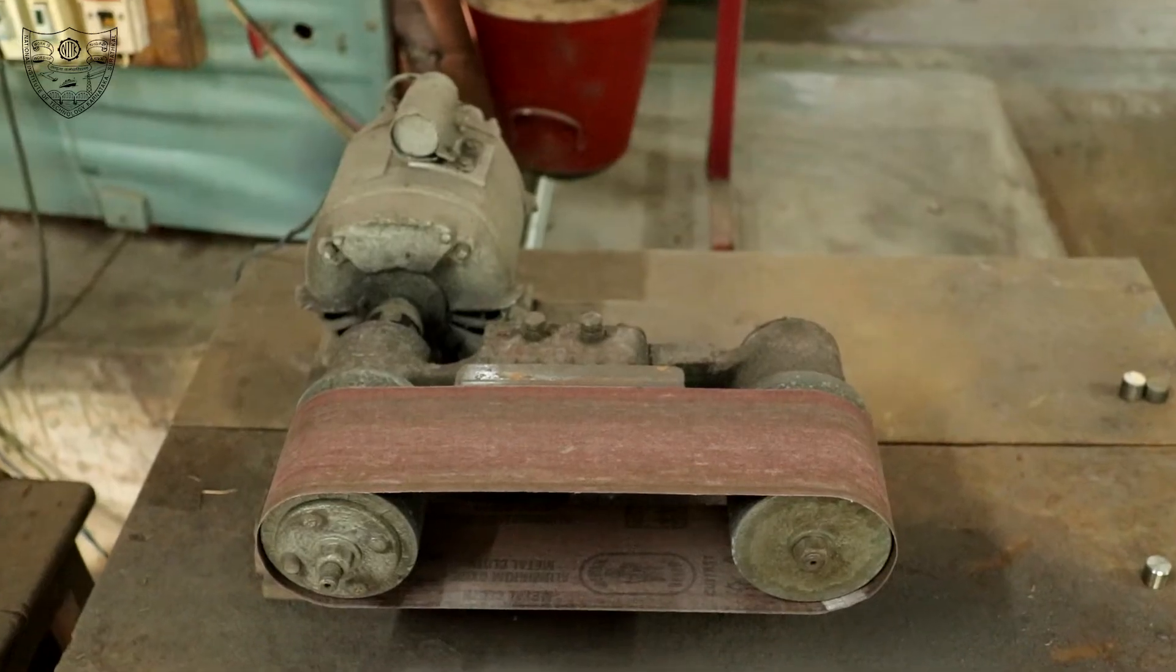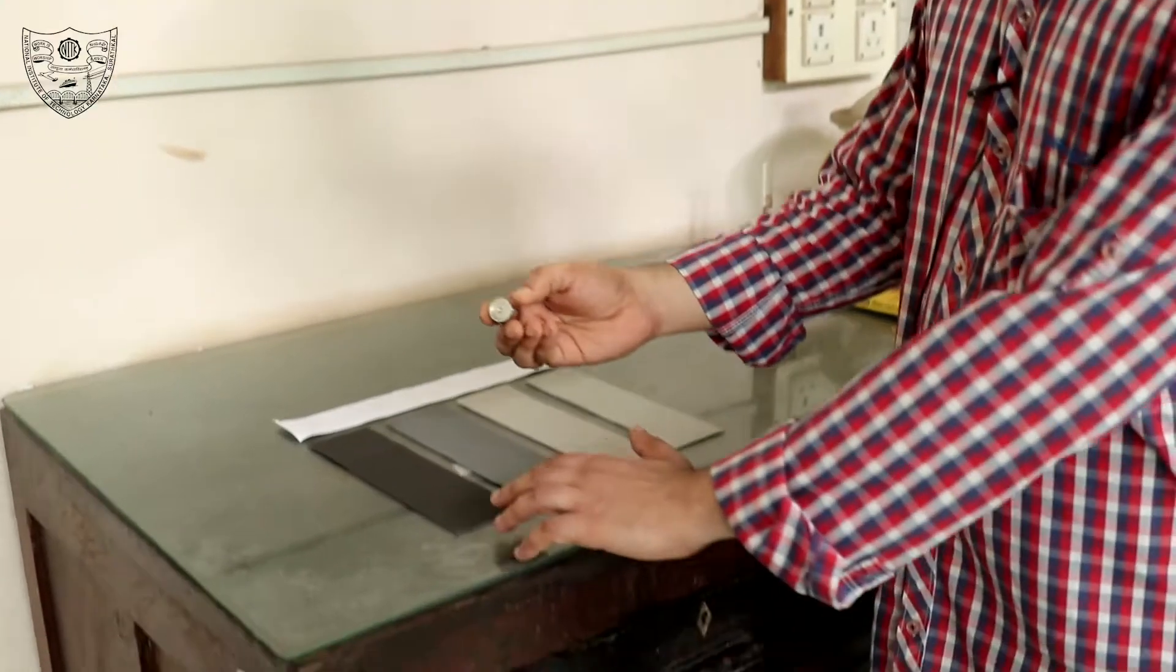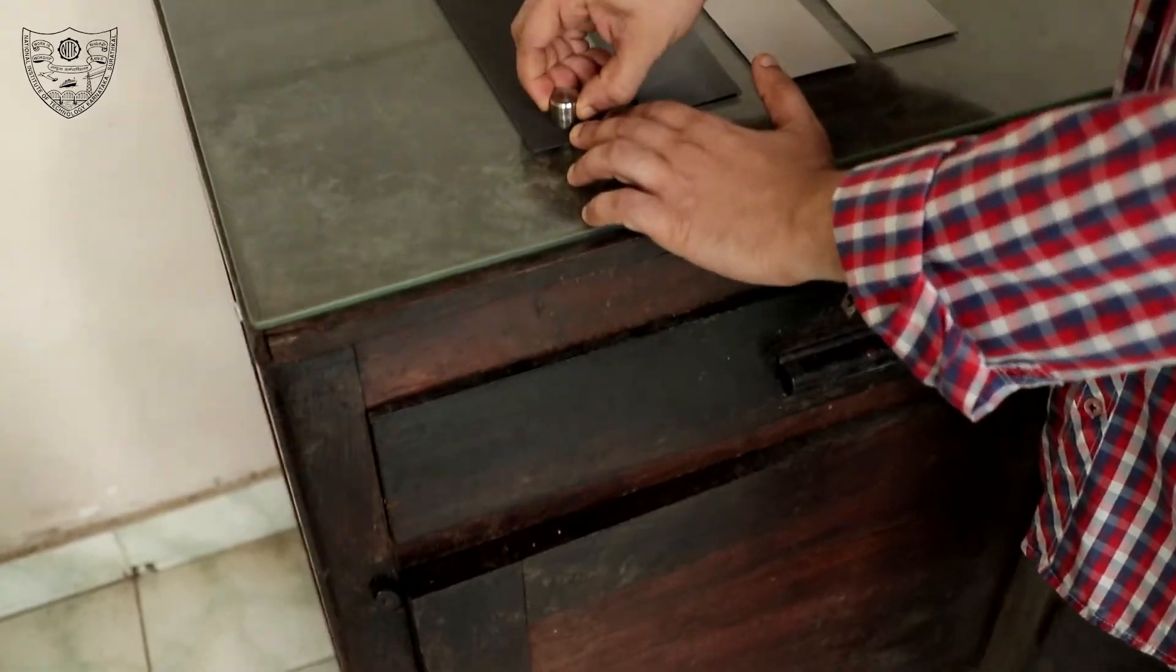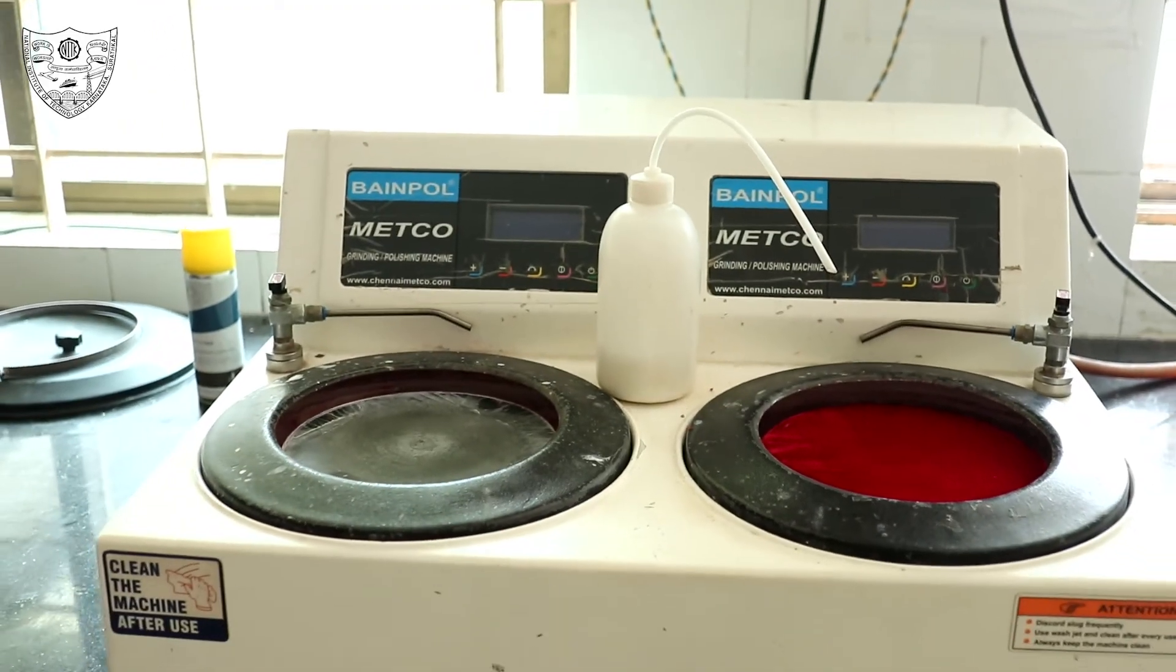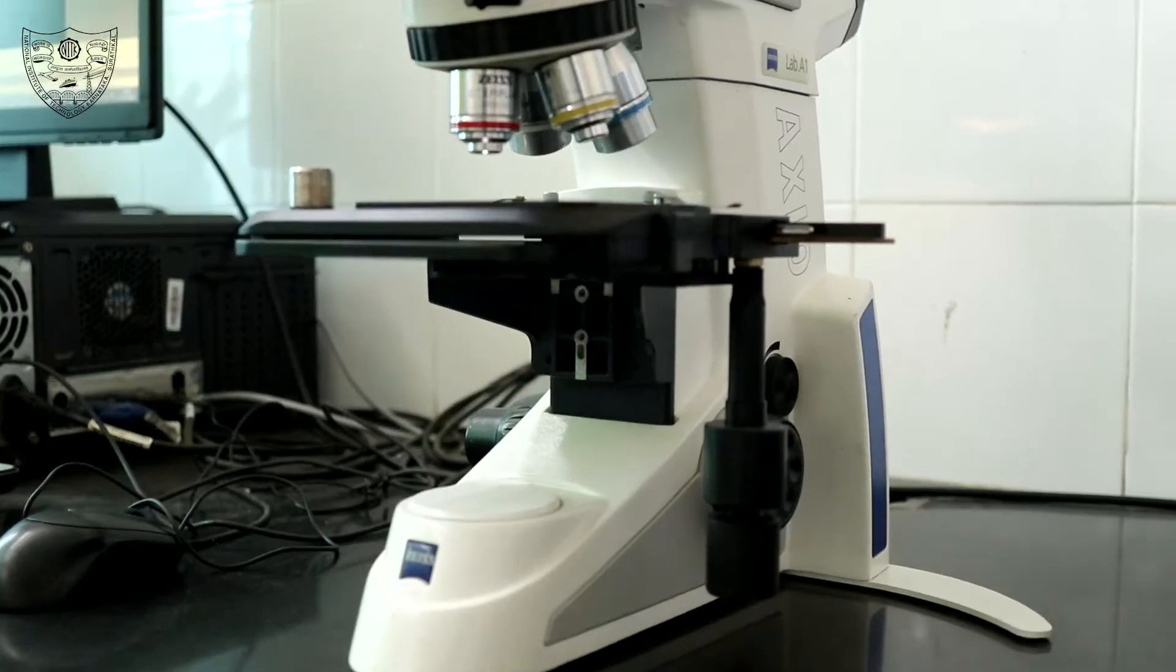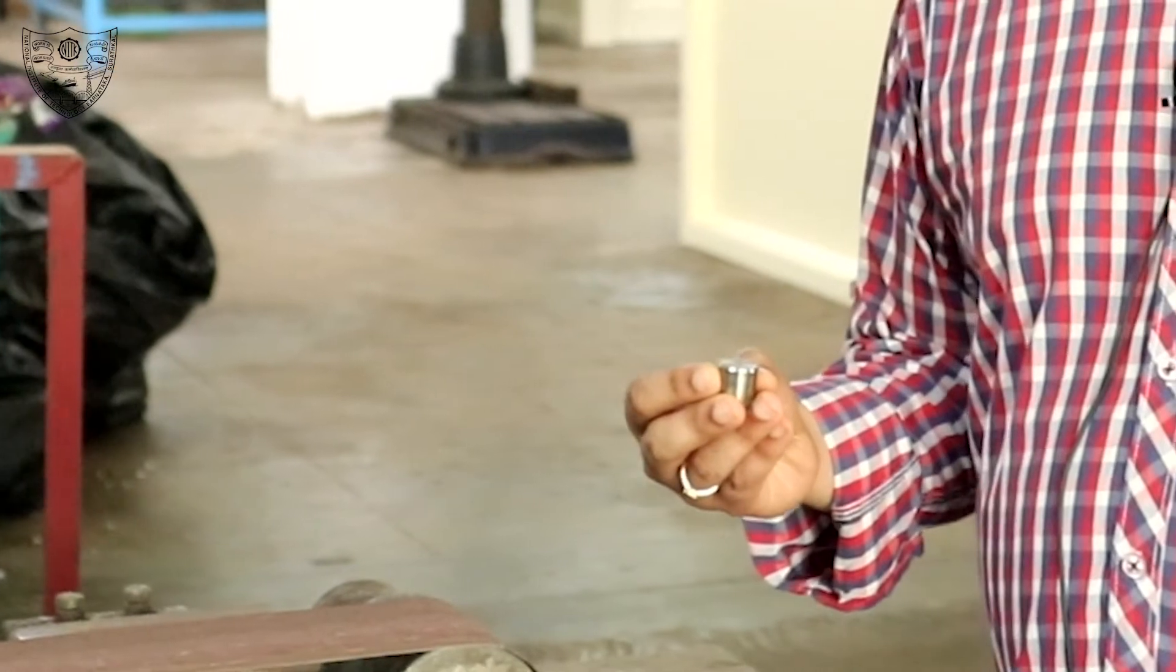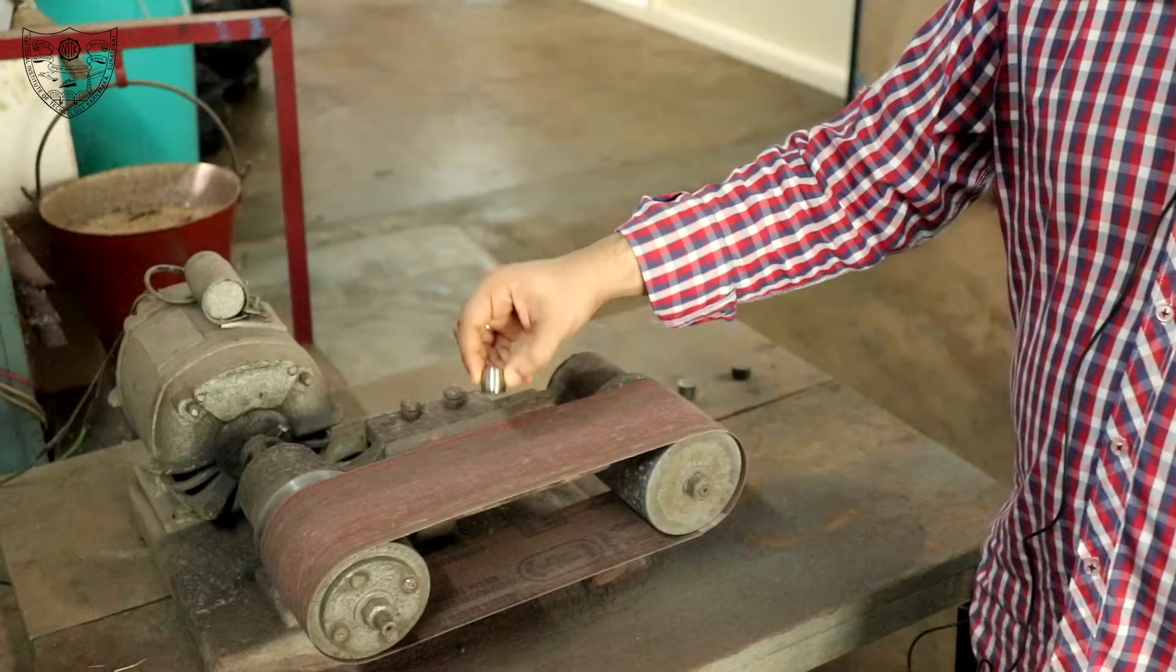The apparatus used are belt grinder, abrasive papers, flat glass plate with wooden framework, polishing abrasive, specimen, marbles reagent as etchant and optical microscope.